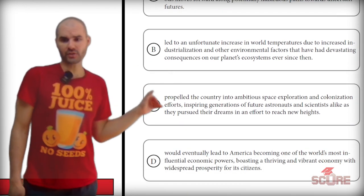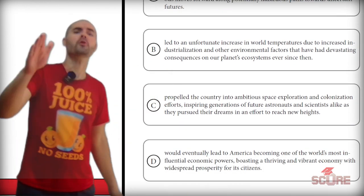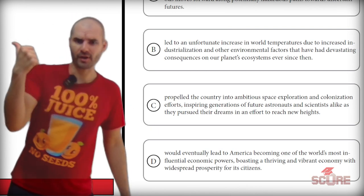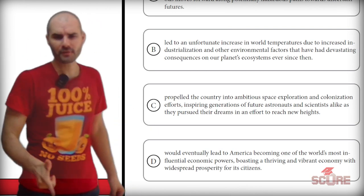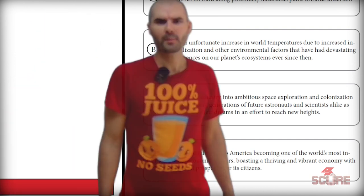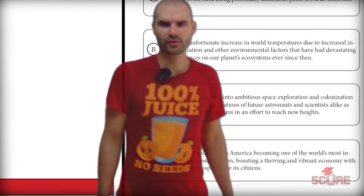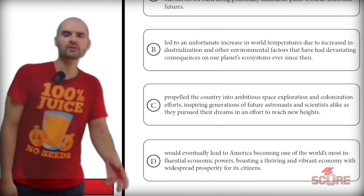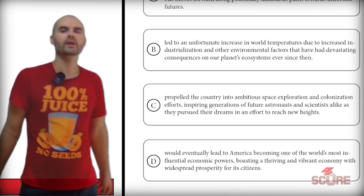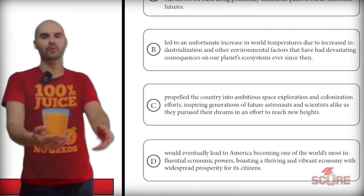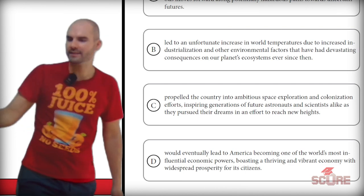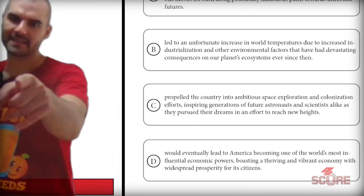Option C says it propelled the country into ambitious space exploration — even more extreme. I don't think you could argue the cotton gin brought Neil Armstrong to the moon. That leaves us with D: would eventually lead to America becoming one of the world's most influential economic powers. That matches our topic sentence about economy. That's the right answer. Mark D, move on and let's get out of here.